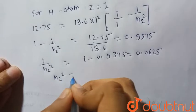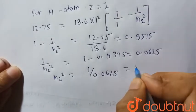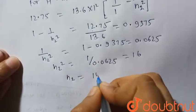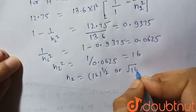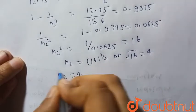So N2 square is equal to 1 upon 0.0625 which will be equal to 16. So N2 will be equal to 16 to the power 1 by 2 or root 16, which is equal to 4. Hence N2 is equal to 4.